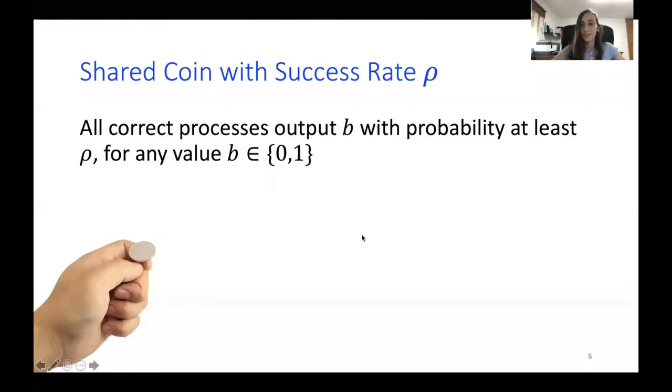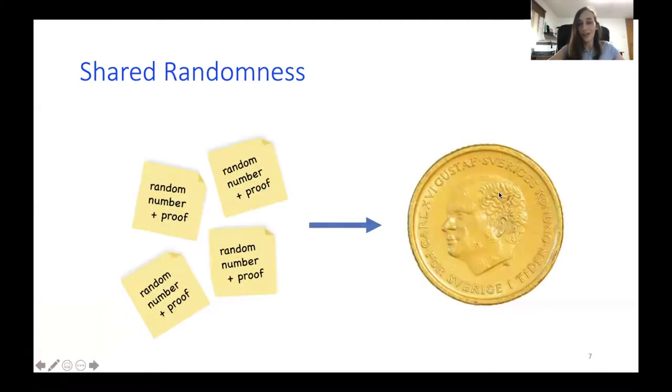So the first use for VRF in our work is a shared coin algorithm. A shared coin with success rate rho is a procedure executed by all correct processes, such that all correct processes output the same bit B with probability at least rho. And what we are trying to do is effectively take this local sense of randomness provided by the VRF at each process and combine it to create shared randomness among all correct processes.